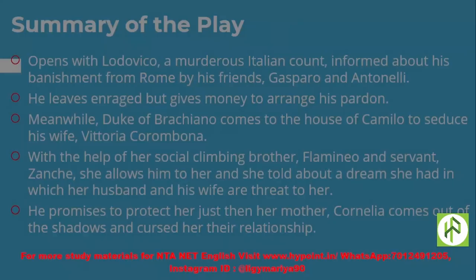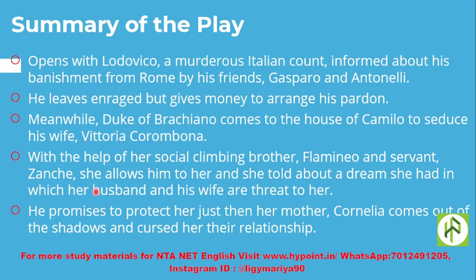Now let's have a detailed summary of the play. The play opens with Lodovico, a murderous Italian count, being informed about his banishment from Rome by his friends Gasparo and Antonelli. He leaves enraged and gives money to arrange his pardon.